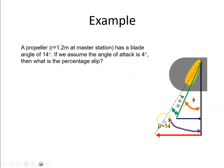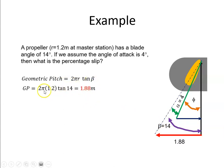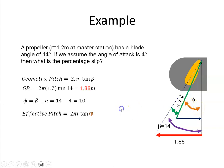The first thing to do is calculate the geometric pitch: 2πr·tan(β). That's 2π × 1.2 × tan(14°), which gives a geometric pitch of 1.88 meters. If the blade angle is 14 degrees and the angle of attack is 4 degrees, then the angle of advance must be the difference — 14 minus 4, which is 10 degrees. Therefore the effective pitch is 2π × 1.2 × tan(10°), which works out to be 1.33 meters.